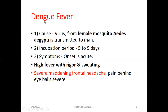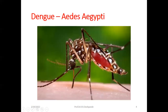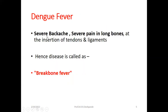The next important symptom of Dengue fever is severe, maddening frontal headache — very, very bad and severe. There is also pain behind the eyeballs. The Aedes aegypti mosquito is the causative factor. After the bite, you get Dengue fever. There will also be severe backache and severe pain in the long bones at the insertion of tendons and ligaments.